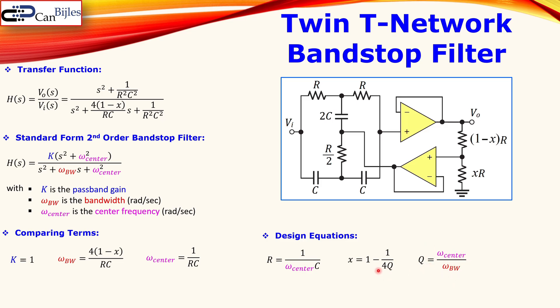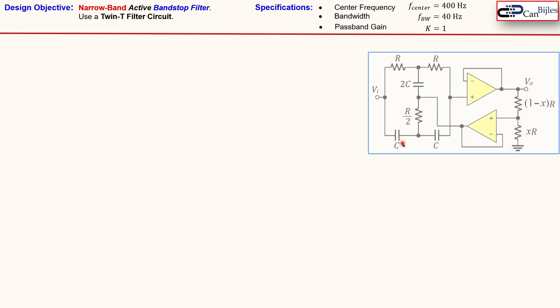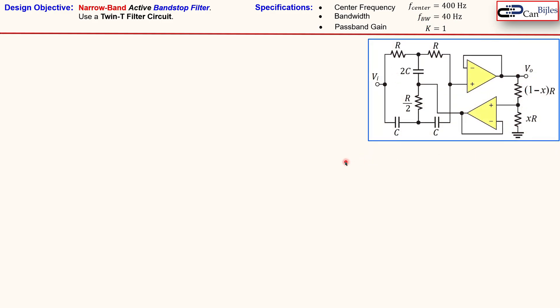Now we have sufficient information to do our design example. We would like to design a narrow band active band stop filter, also called a notch filter, using this twin-T filter circuit. The specifications are: center frequency must be 400 Hz, the bandwidth must be 40 Hz, and the gain at the passband region must be one, or 0 dB. Here is the circuit again — we need to calculate all the resistors and capacitors.